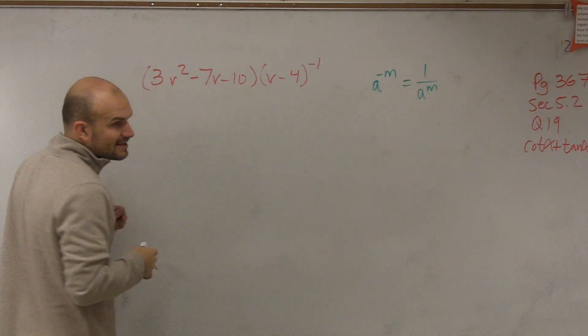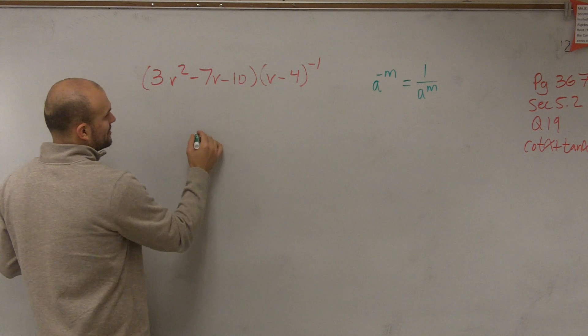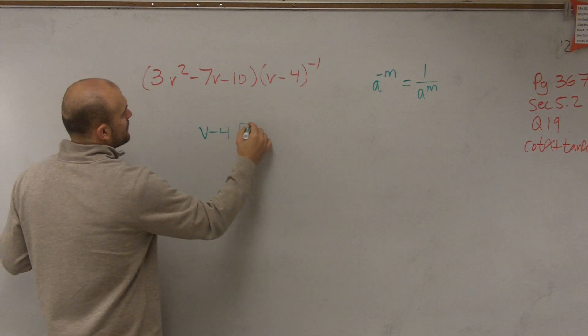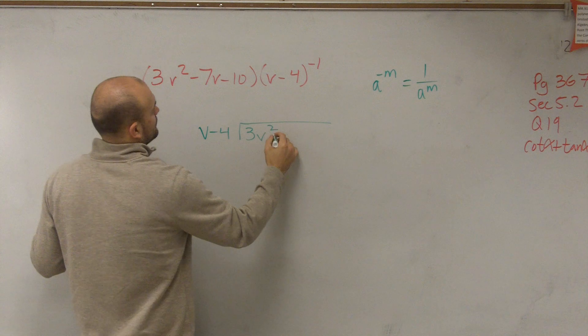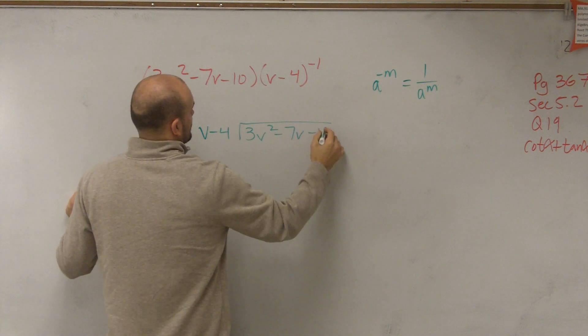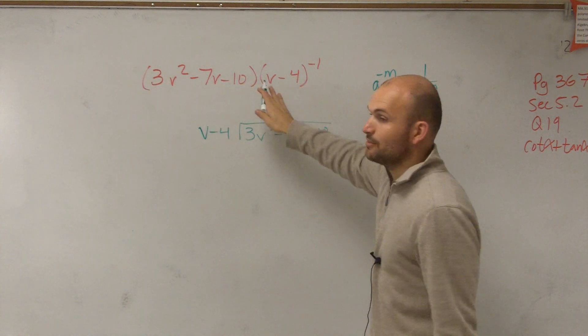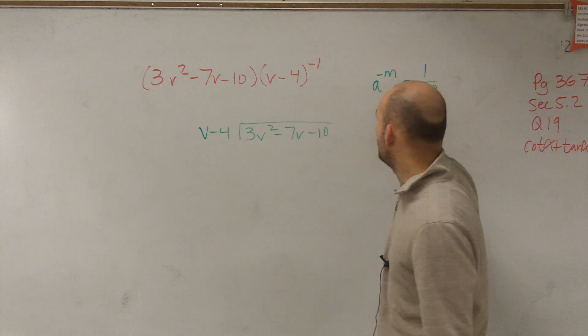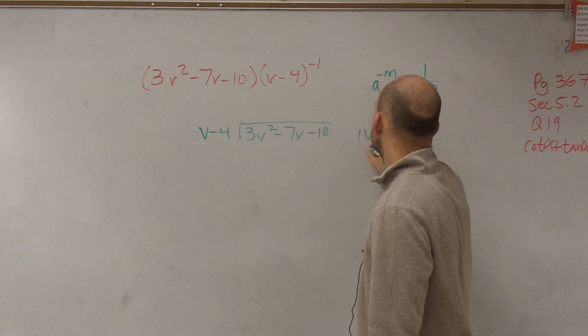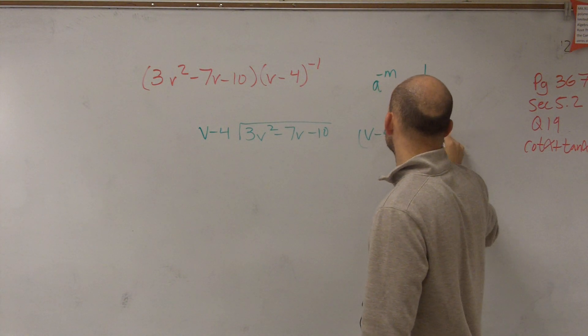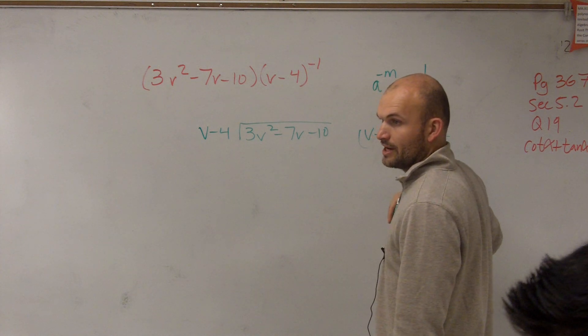So I can rewrite this again using my long division algorithm. So I have v minus 4, right? It's multiplication. But remember, v minus 4 to the negative first power is equal to 1 over v minus 4, right?